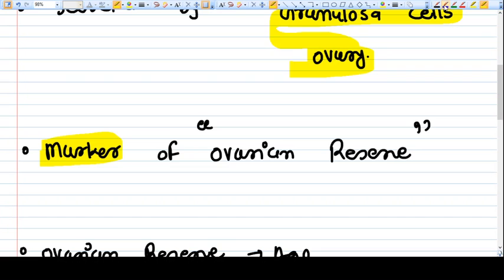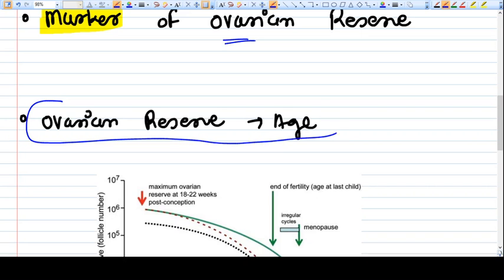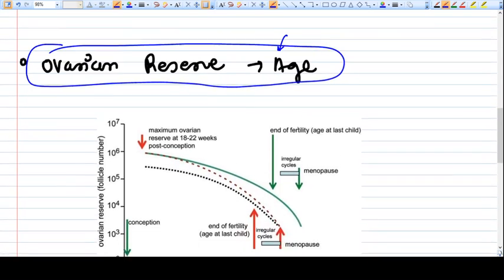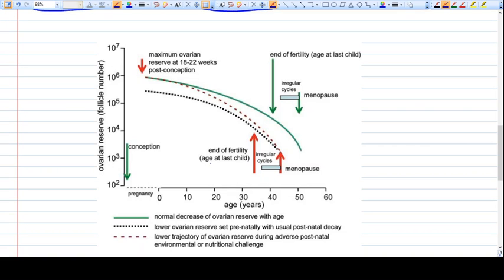Why we consider it a marker of ovarian reserve? Because if you see the pattern of ovarian reserve according to age: whenever the female baby is intrauterine, the ovarian reserve is highest. Then the baby is born. At that time, the ovarian reserve is in millions. There are millions of ova in the ovary of a newborn female child.